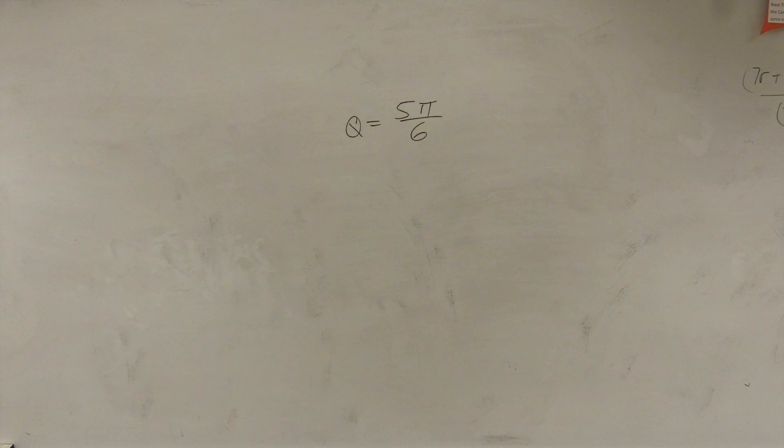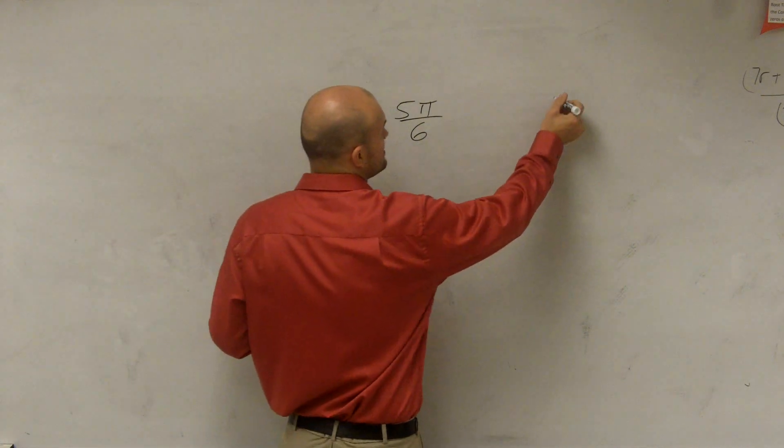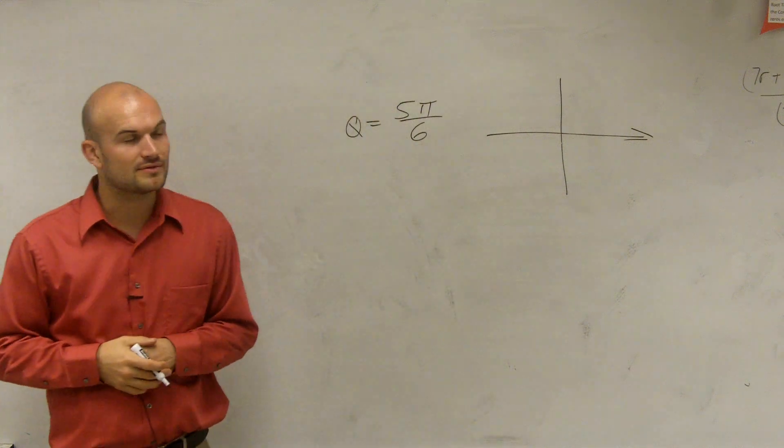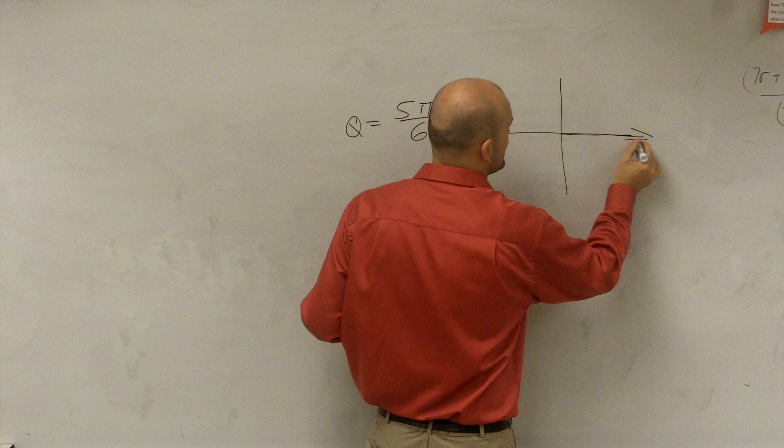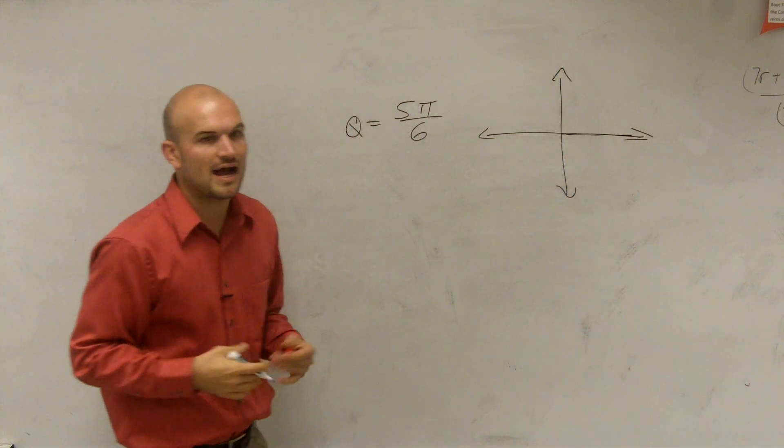Co-terminal angles have the same initial and terminal sides. So to practice with 5π over 6, what I'm going to do is remember I always know my initial side because this equation is going to be in standard form. However, how do I graph 5π over 6?